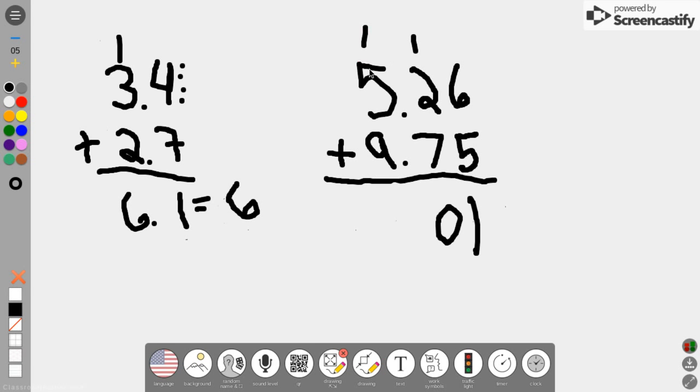5 plus 1 is 6, 6 plus 9 gives me 15. Bring down the decimal.